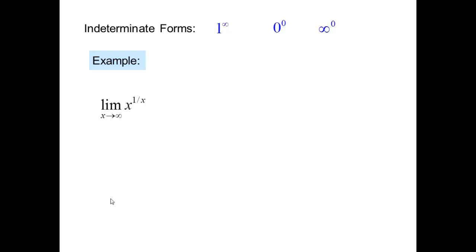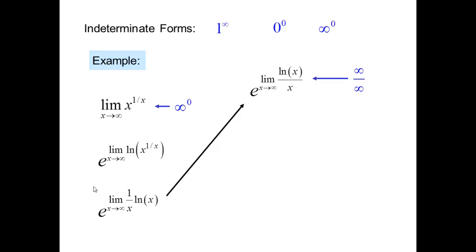Consider the example limit of x^(1/x) as x tends to infinity — it's infinity to the power 0. We need to solve it by turning it into the form 0 by 0 or infinity by infinity, since those are the two forms solvable by L'Hôpital's rule. Using the same procedure — taking ln and converting to a ratio — we solve until we get the answer. Finally L'Hôpital's rule is applied and we get e^0 = 1.